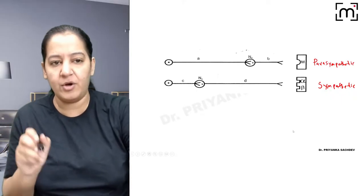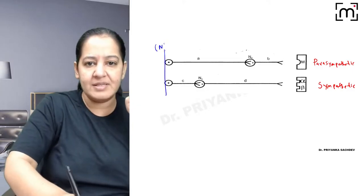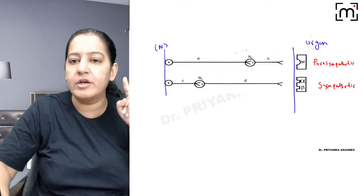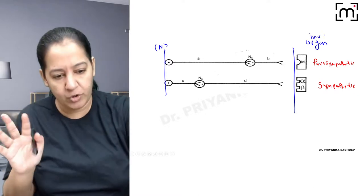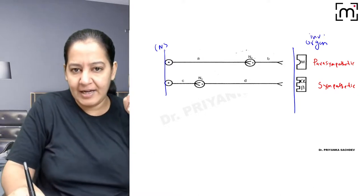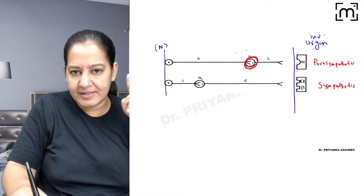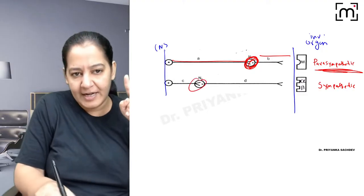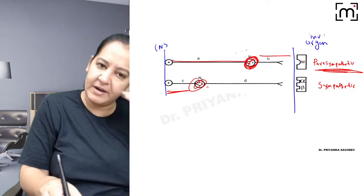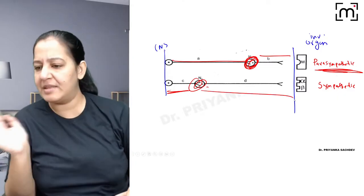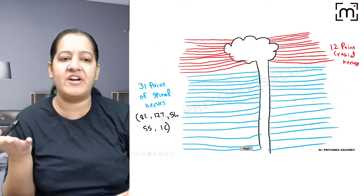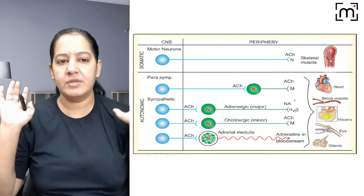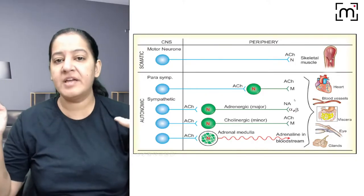Looking at this standard diagram from KD Tripathi: this is the CNS, this is the organ. The organ is either skeletal muscle — making it somatic — or involuntary smooth muscle — making it autonomic. In the autonomic systems shown, the ganglion location determines the type. If the ganglion is towards the organ, pre is longer than post — that is parasympathetic. If the ganglion is close to the CNS, post is longer than pre — that is sympathetic.